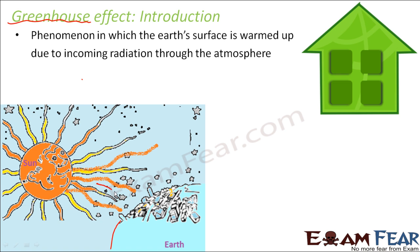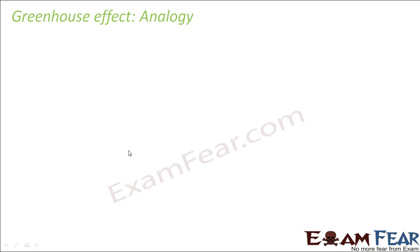Just as incoming radiation comes from the sun to the earth, some radiation also goes out from the earth to outer space. A part of the radiation also gets reflected as soon as it falls on the surface of the earth. We will take an analogy — the example of a piggy bank — to understand how the atmosphere plays an important role in balancing the incoming and outgoing radiation.